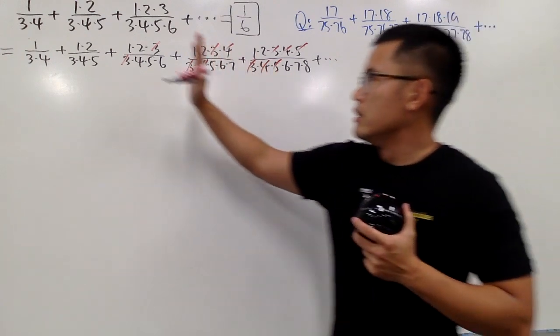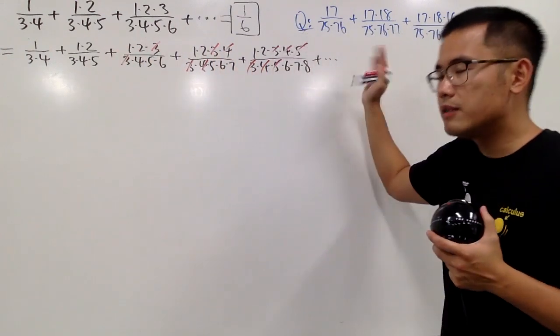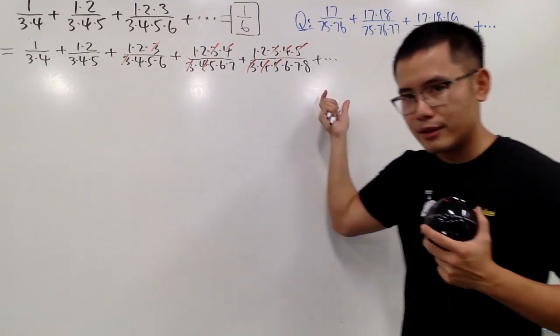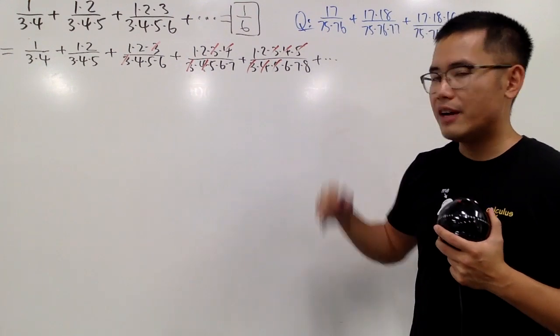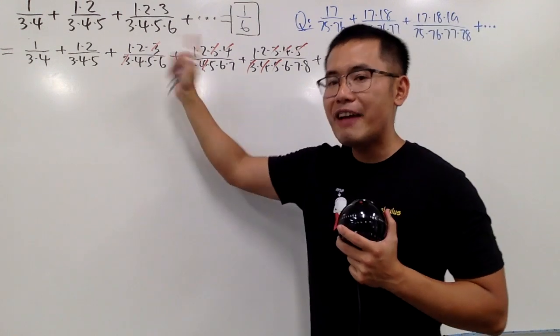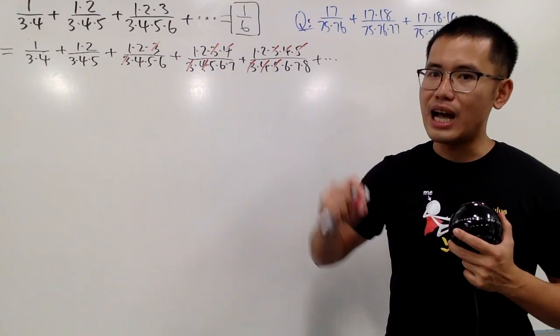Notice that from the third term and after, we only have three things in the denominators. Right? And they do have a nice pattern. And on the top, everybody has one times two. So we can factor that out.